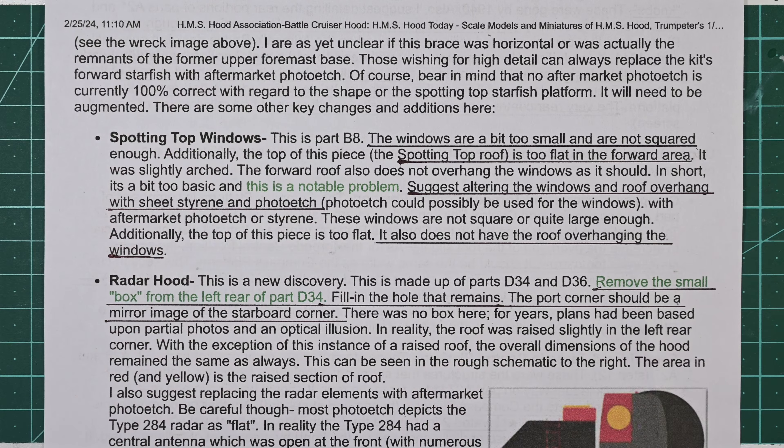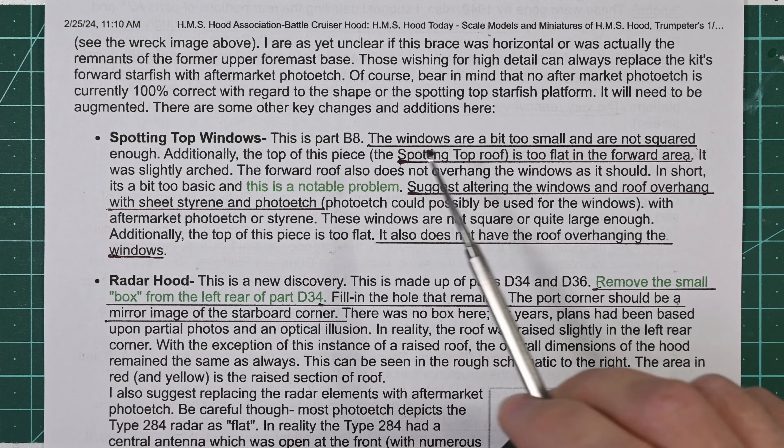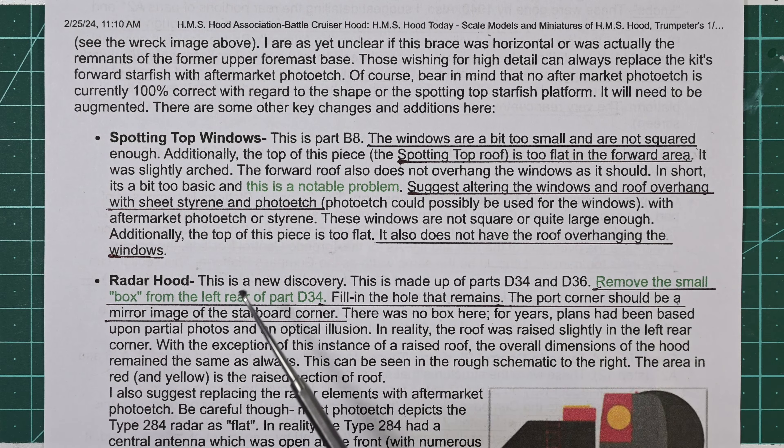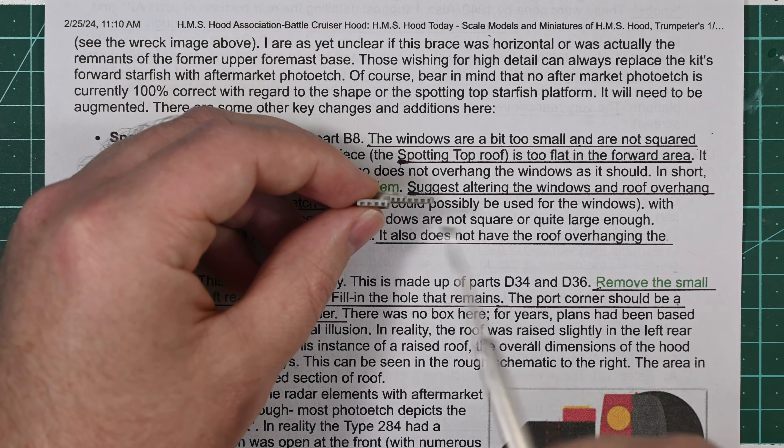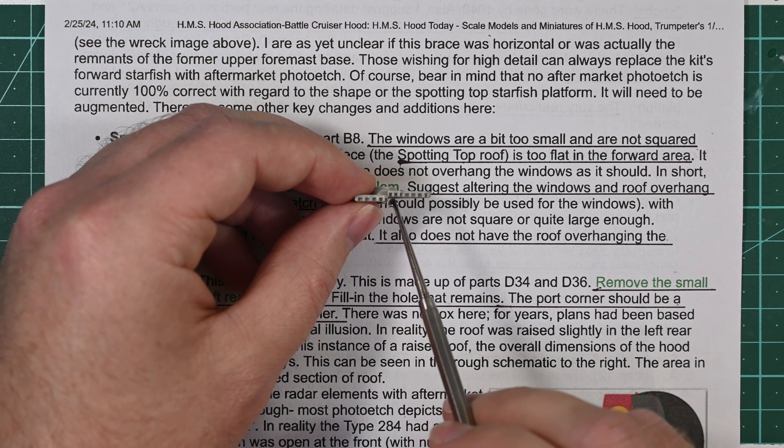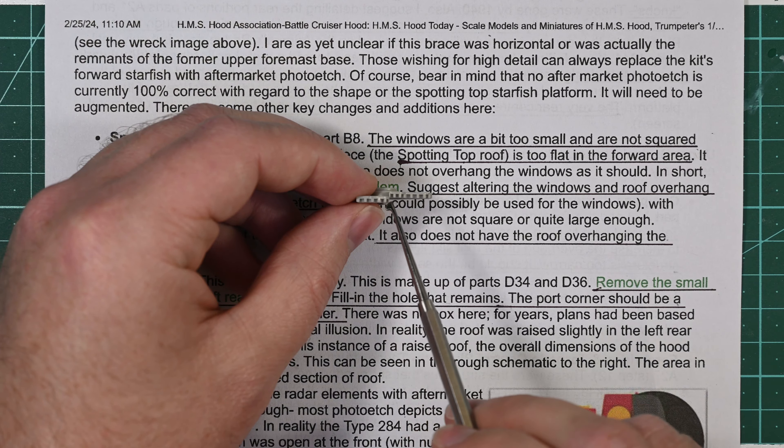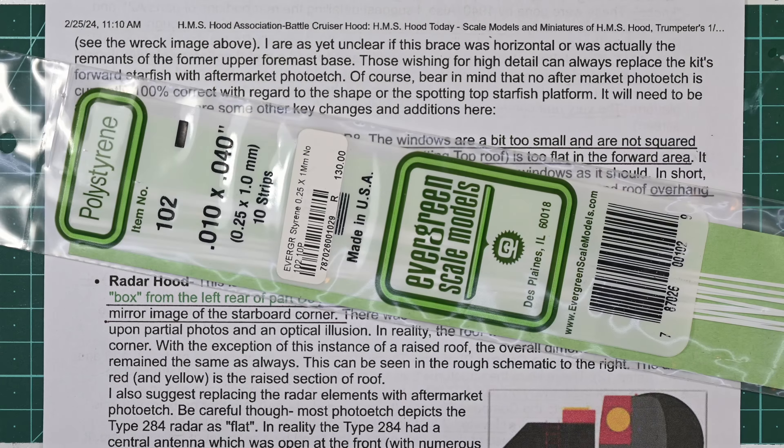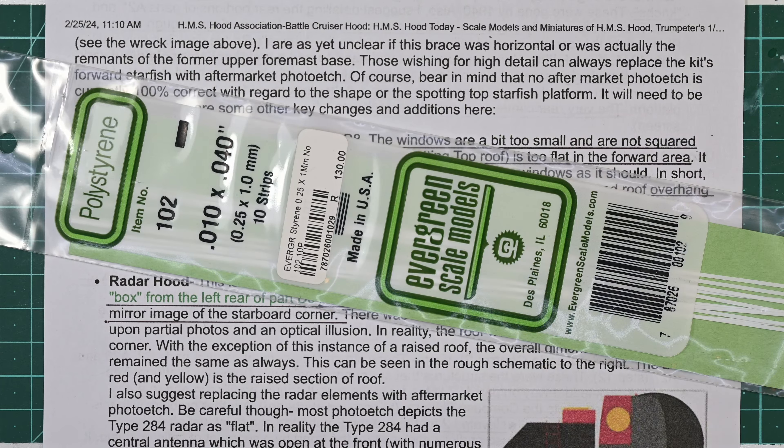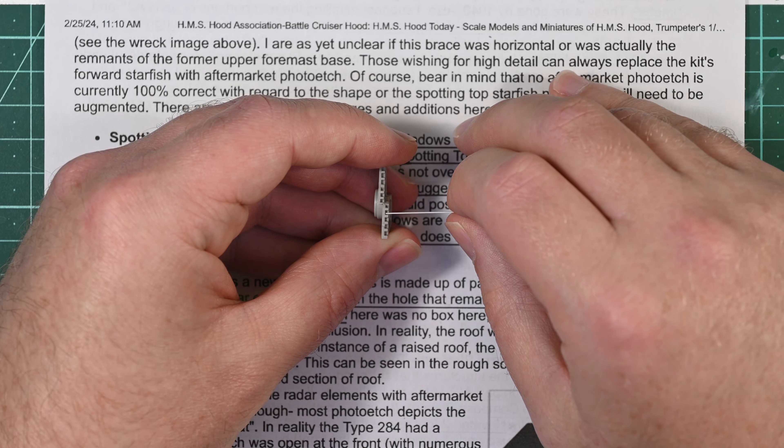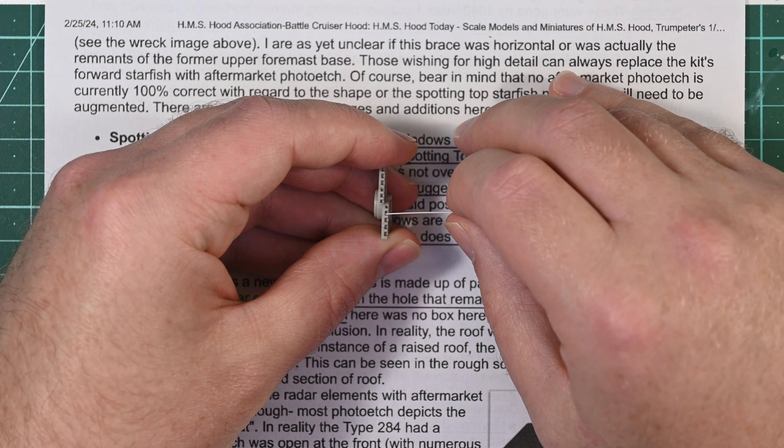Following the guidance from the HMS Hood Association, we know that the windows are a bit too small and not squared. What I'll be trying to do is make these frames around the windows smaller by cutting out this plastic and replacing it with 1 millimeter by 0.25 millimeter plastic stock. If I install the plastic stock on its edge, I'll have a much more narrow frame than as molded on this plastic part.